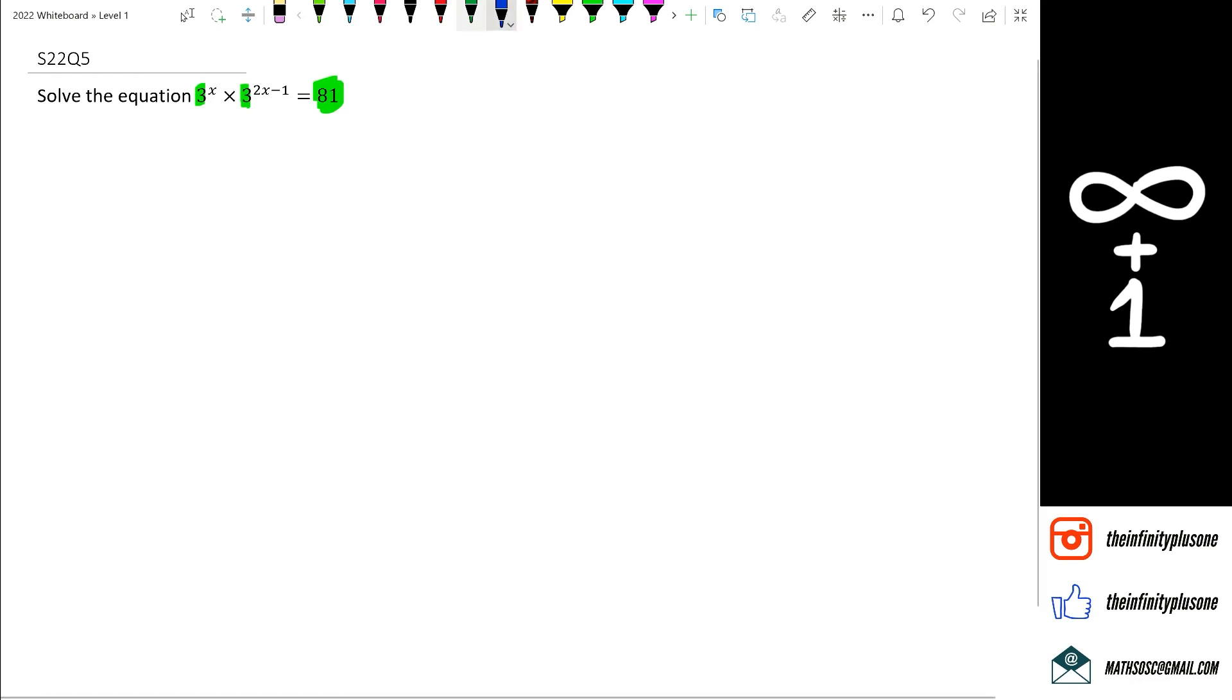Now if you've been keeping up with my tutorials, you would know that we have these special numbers. 3 to the power of 1 is 3, 3 squared is 9, 3 to the power of 3 is 27, and 3 to the power of 4 is 81. How do I know this? Because I know that 3 times 3 times 3 times 3 is equal to 81.